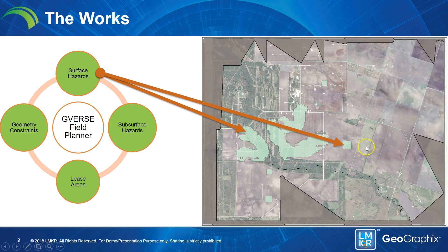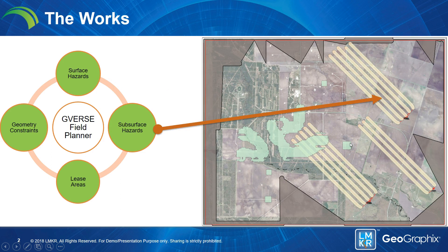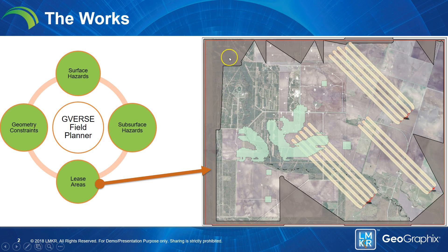We also put a couple of blocks over here to represent pads where we cannot place any new wells. Now let's talk about subsurface hazards — these are wells that already exist in the area. We have placed buffer zones around them, so underneath the earth we cannot place new wells in those areas. Third, we have lease areas. Notice the areas that are not grayed out — these are our valid lease lines, so we can place our wells there, but once we reach the boundaries, the wells have to be cut off.